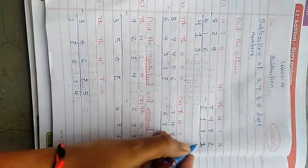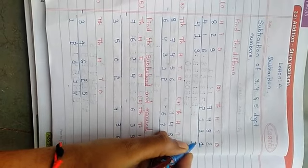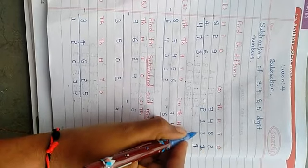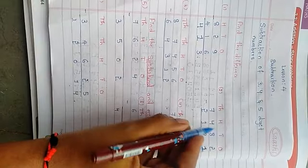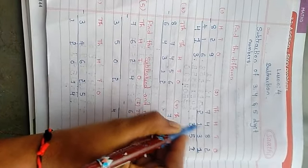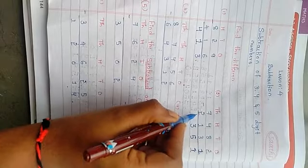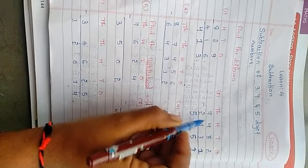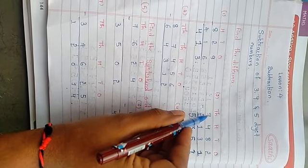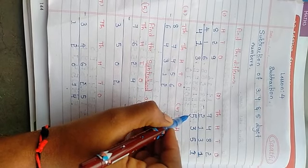Next one: 2 minus 1 is 1 and 8 minus 3 is 5, 4 minus 1 is 3, 7 minus 2 is 5. If you subtract 2 from 7, you will get answer 5.